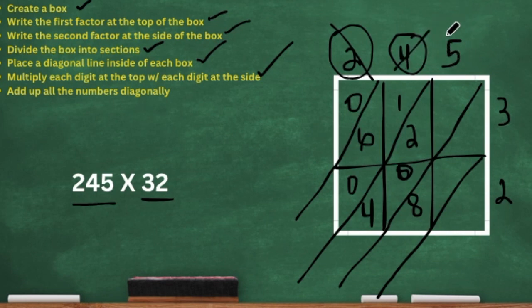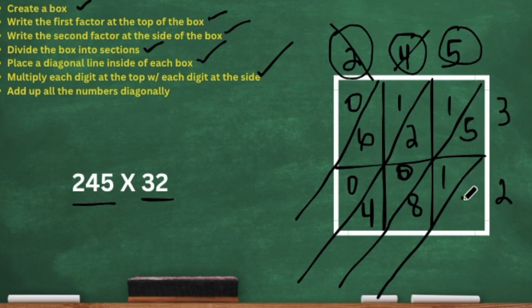Now let's go to the five: five times three is 15 — put that in. And then five times two is 10. So we multiplied the five by each digit on the side. Let's just cross those out too, because we don't need them and we don't want to get confused.